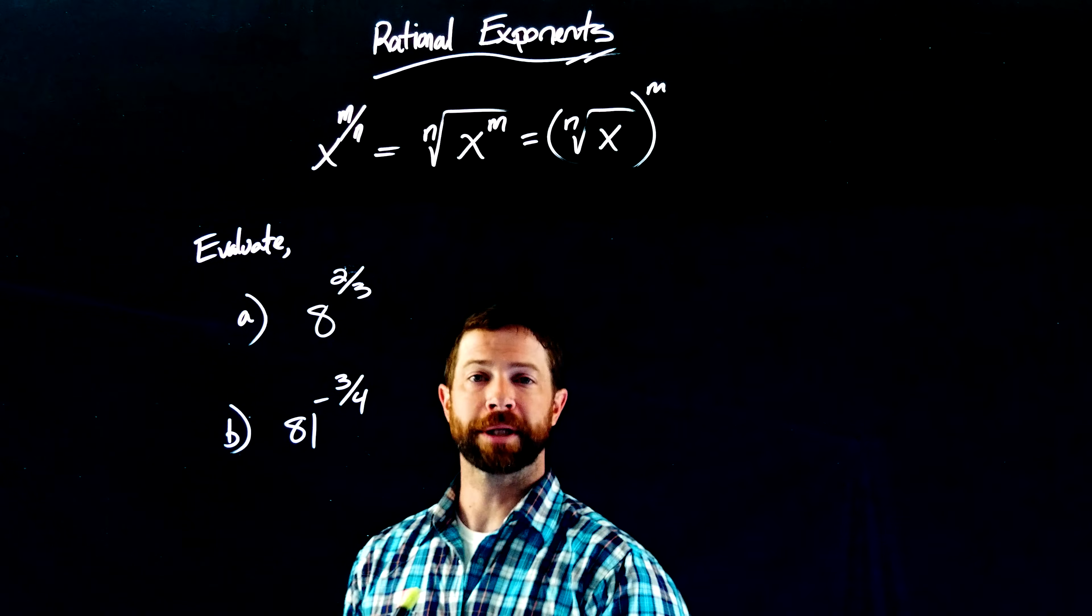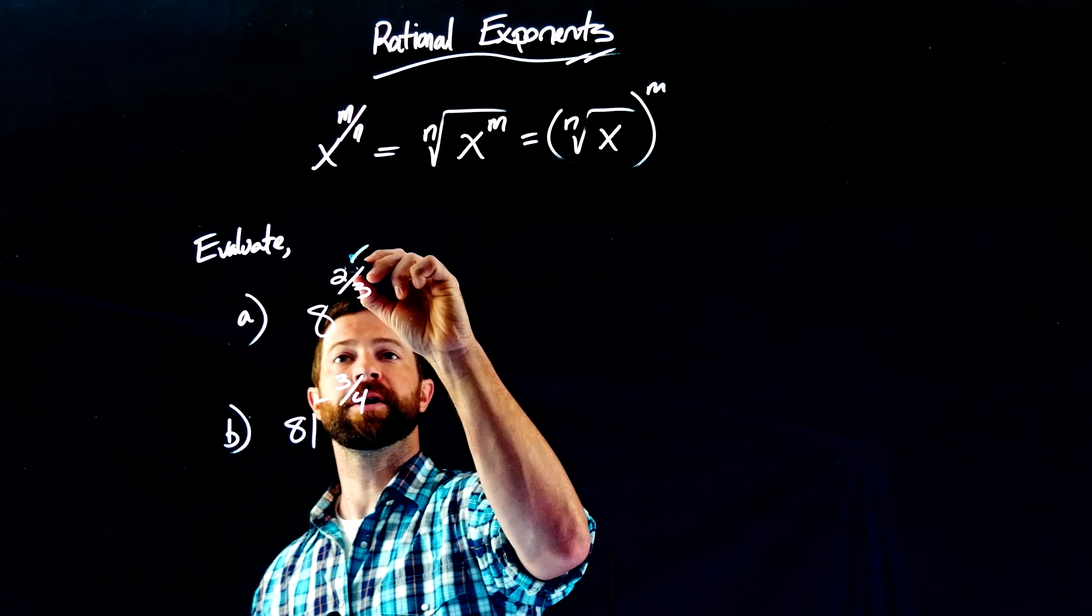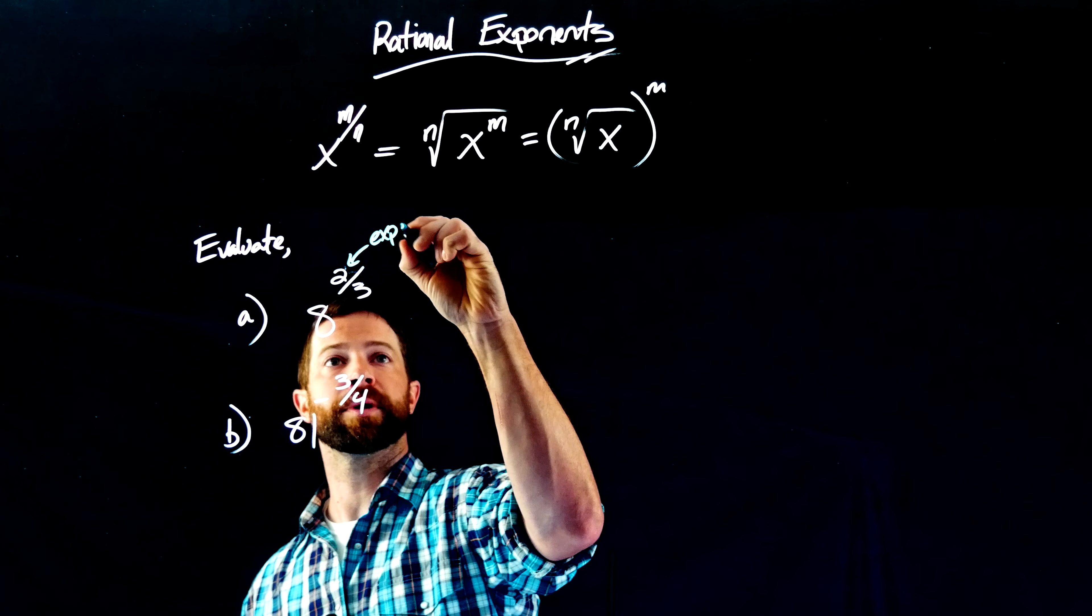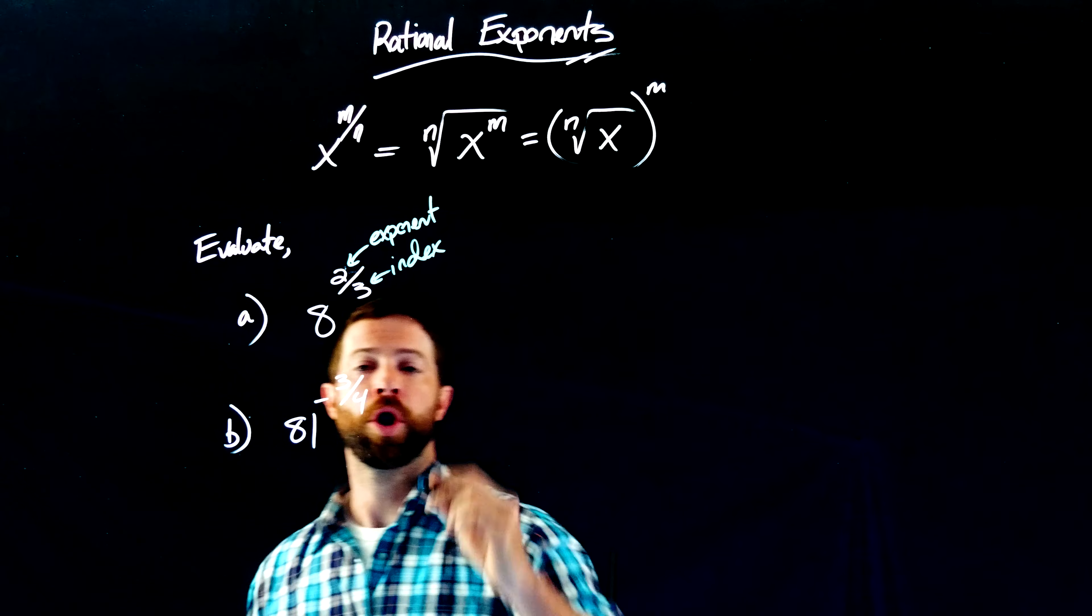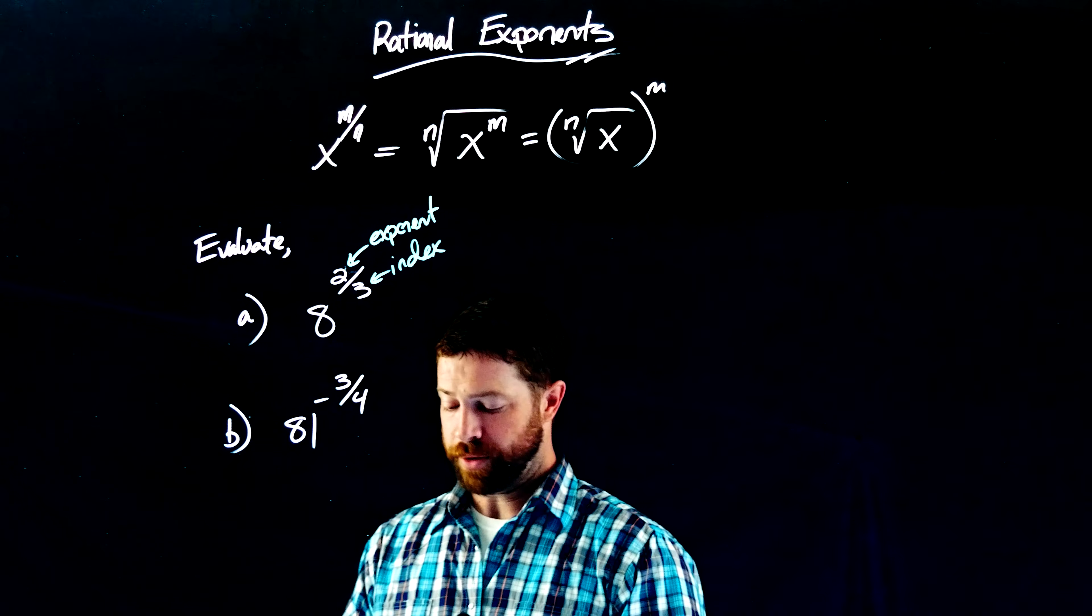First and foremost, I just want to look at this and remind myself, the numerator here, this is going to be the exponent, and the denominator is going to be the index when I write these in radical form.